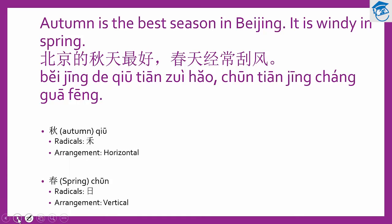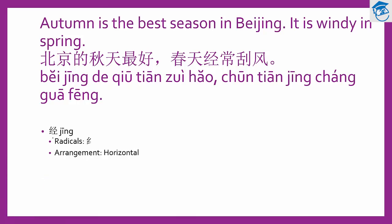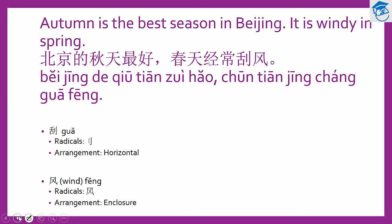The next word is 经. 经 has many different meanings in different contexts, but to say 经常, it means always. This is the pinyin 经, and the radical is on the left. The arrangement is horizontal, with left and right components. Let's look at how to write 经: eight strokes for this word.